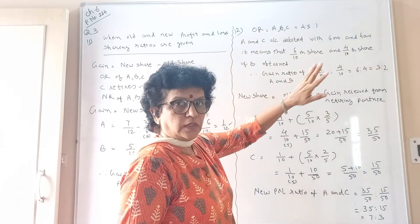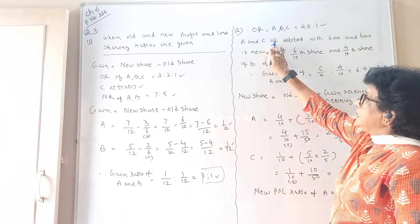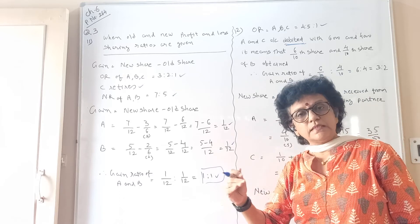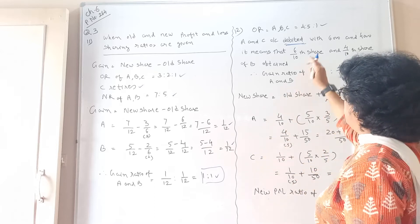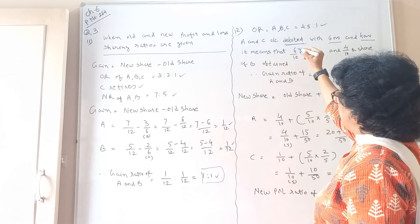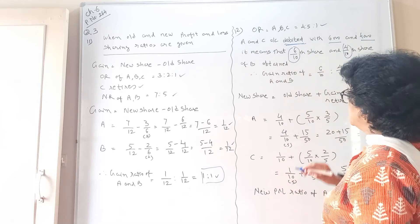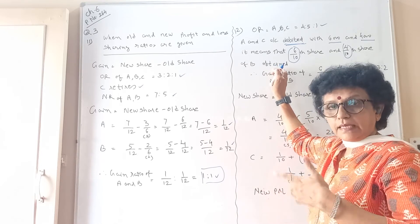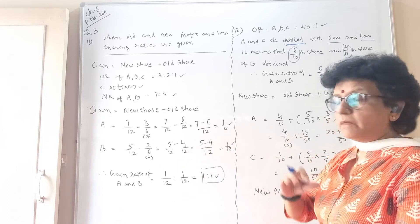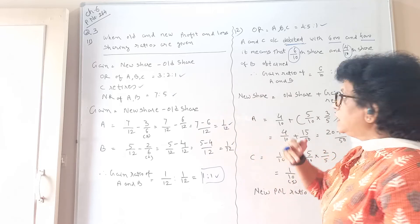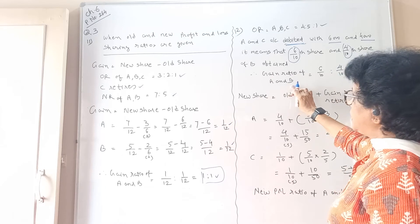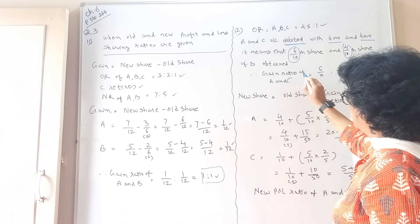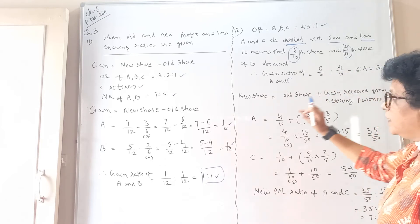With this information you have to find out the gain and the new profit sharing ratio. The old ratio is 4:5:1. A and C's accounts are debited. Debited means their capital is reduced — because they have gained. In proportion to the gain, their accounts are debited: 6,000 and 4,000. So in reduced form that is 6/10 and 4/10, giving a gain ratio of 6:4 = 3:2 for A and C.